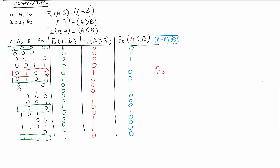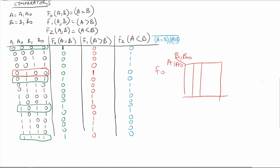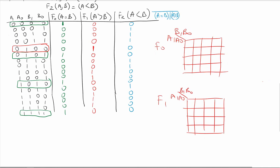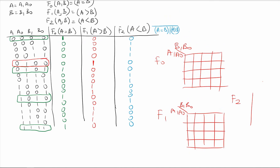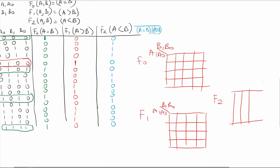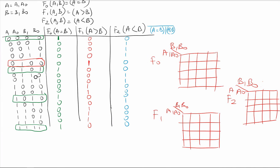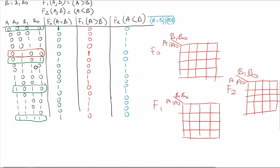To find the Boolean functions, I would normally use a four-variable Karnaugh map for F0, another for F1, and another for F2, then minimize them. However, I will not go through this Karnaugh map method — instead I will directly write the Boolean functions. You can try the Karnaugh map yourself and verify that your results match what we find.